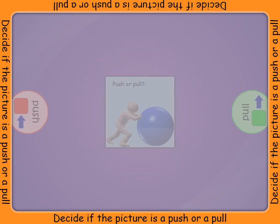Look closely at the picture in the middle. It will show either a push or a pull. Decide which one is happening in the picture and find the right bubble to drag into the middle. Touch the bubbles to hear what they say.